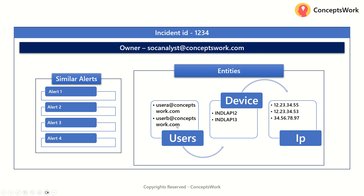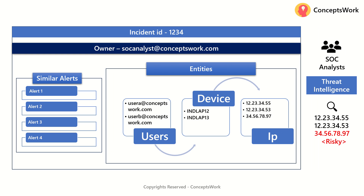Now assume I am the SOC analyst and I own this particular incident. The moment I see it, I'll log into some threat intelligence solution and check the risk of the IPs involved. If I find one IP is risky, I'll contact the network team and get that IP blocked for the internal network — a basic example of how it works in a nutshell.